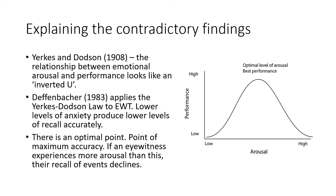Explaining the contradictory findings: anxiety had a negative effect on recall in Johnson and Scott but a positive effect in Yuill and Cutshall. Yerkes and Dodson (1908) put forward the Yerkes-Dodson law — the relationship between emotional arousal and performance — which looks like an inverted U on the graph to the right of the screen. Deffenbacher (1983) applied this law to eyewitness testimony. Lower levels of anxiety produce lower levels of accurate recall. There is an optimal point in the middle of the inverted U where performance and accuracy are at their best. If an eyewitness experiences more arousal than the optimal level, their performance starts to decline and recall of events is worse.